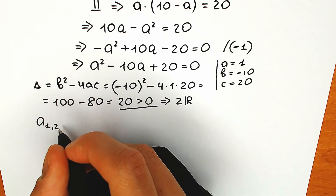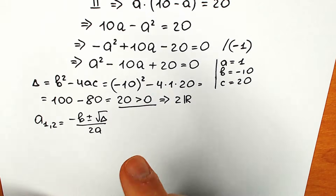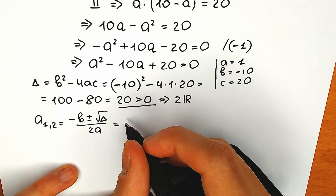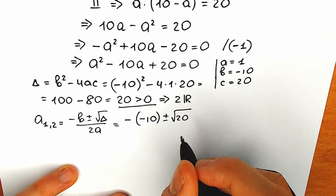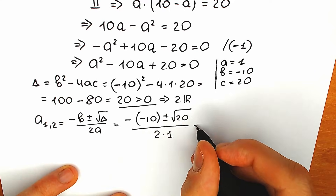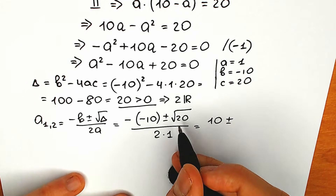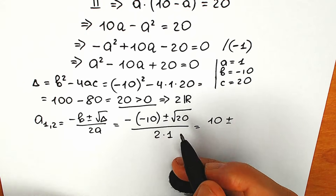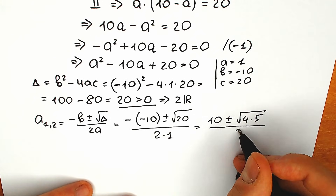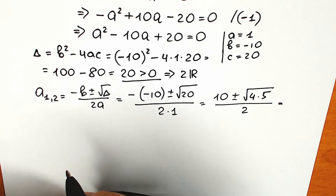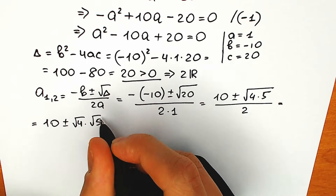So let's find a first and a second. They equal (minus b plus-or-minus square root of D) all over 2a. Plugging in: minus b is minus (minus 10) which is plus 10, plus-or-minus square root of 20, all over 2 times 1. Since 20 is not a perfect square, let's write it as 4 times 5, so we have 10 plus-or-minus square root of 4 times square root of 5.